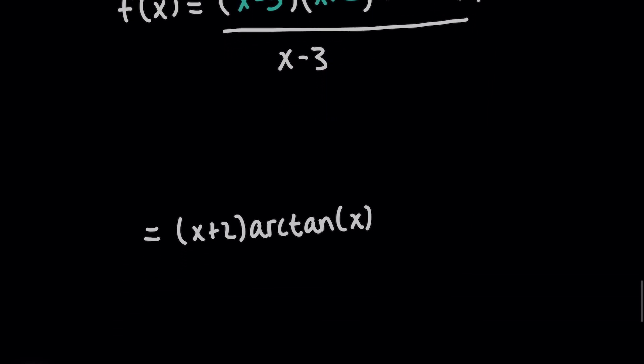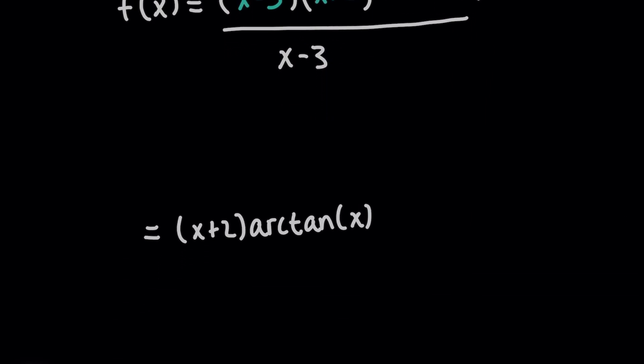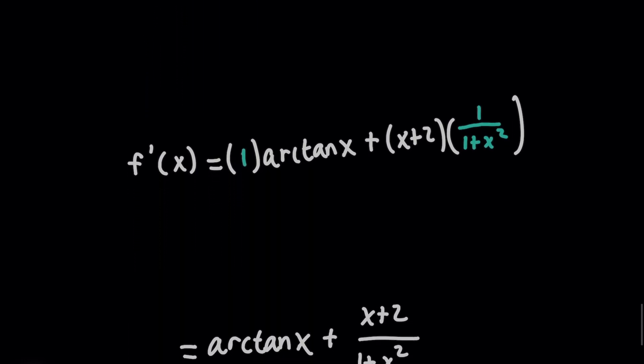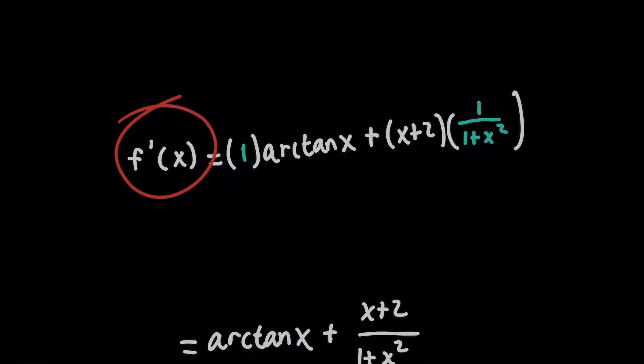let's just say you went ahead and canceled x minus 3 on the top and bottom, giving you this expression. And then when you find the derivative of this, you're going to use the product rule, and you're going to come up with something that looks like this.